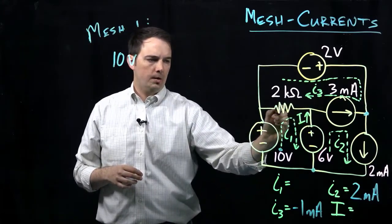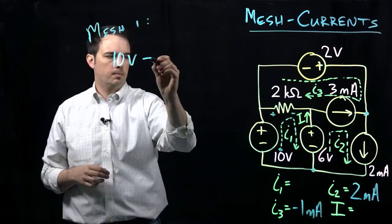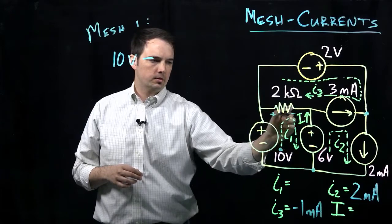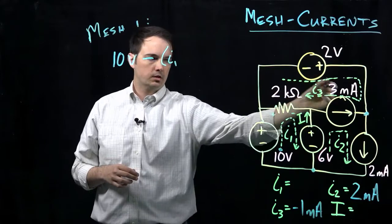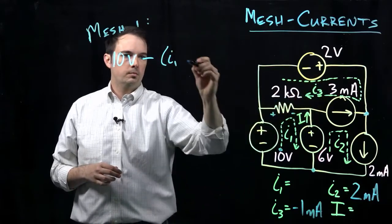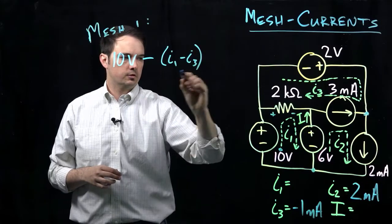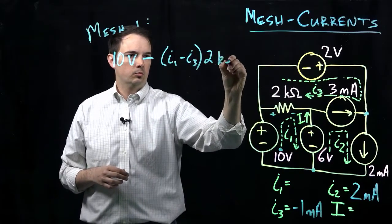Then we'll have a voltage drop across our resistor if I follow the direction of the current, so this will be a minus. The actual current flow through my resistor is going to be this current I1 minus the current I3, because the current I3 is also imposing a current there. So it's going to be the difference of those two multiplied times this 2 kiloohm resistance.